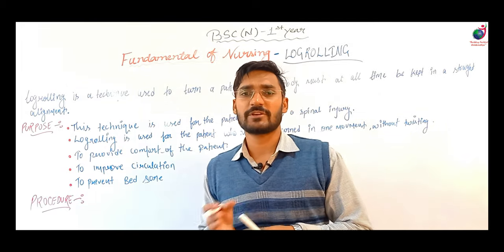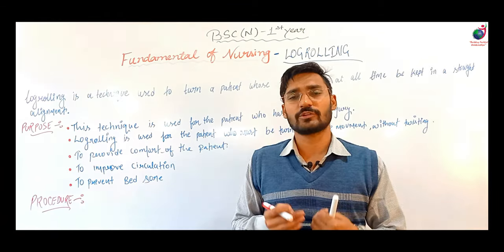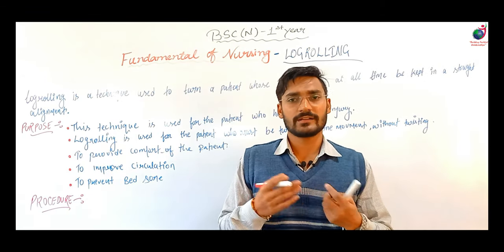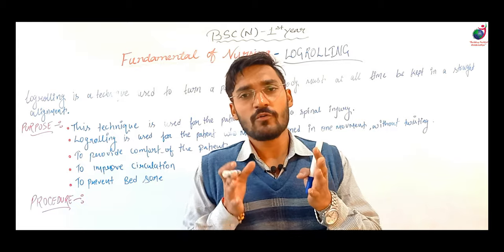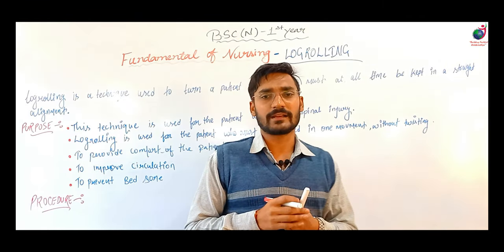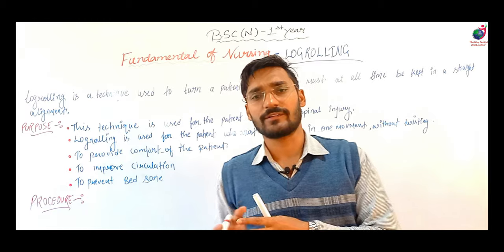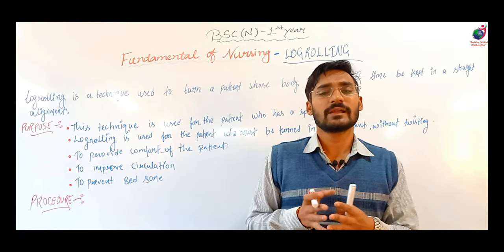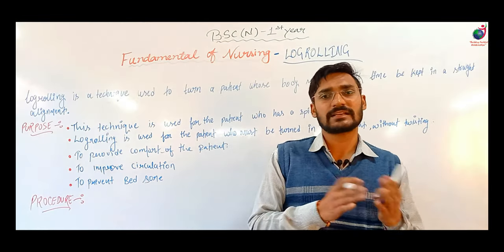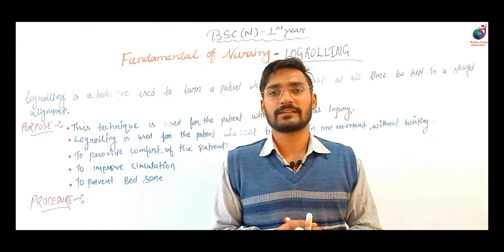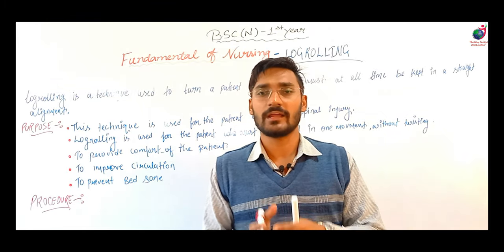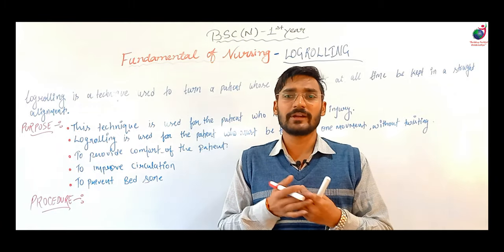We must not twist the patient, or bend the patient at any point, so that there is no discomfort. To rotate the patient, a minimum of 3 caregivers should be present. Then, we count: 1, 2, 3. After 3 counts are complete, we roll the patient together.